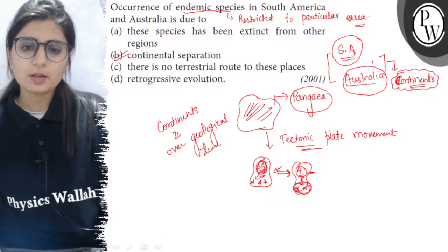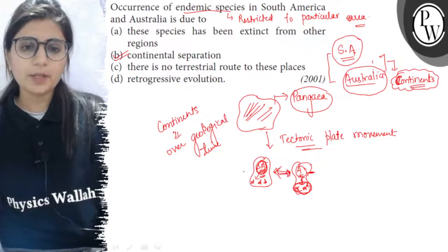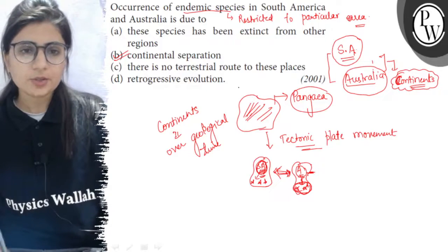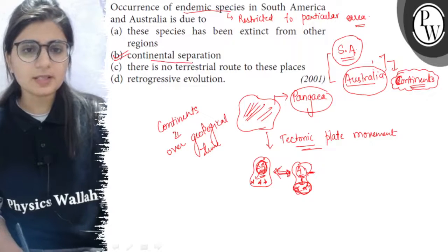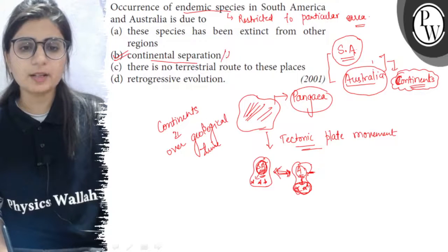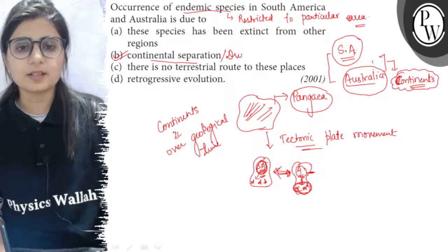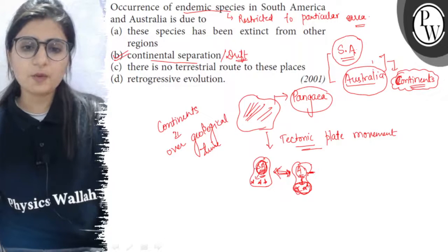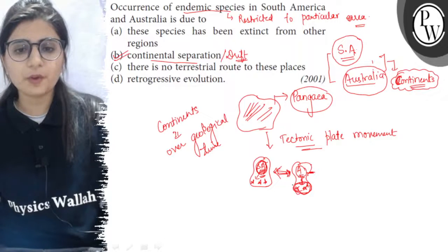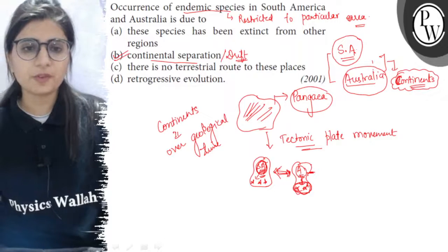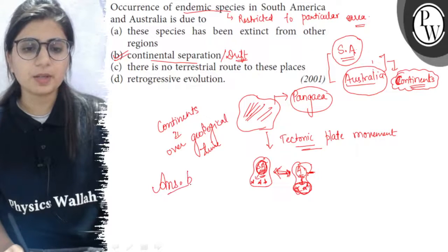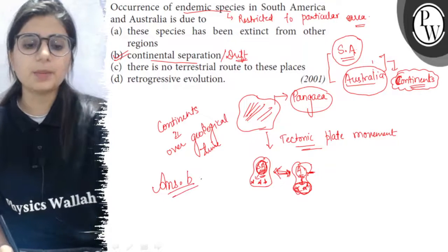So this movement of the continents — known as continental separation or continental drift — is the major reason for the evolution of different species on different continents. The right answer to this question is option B. All the best.